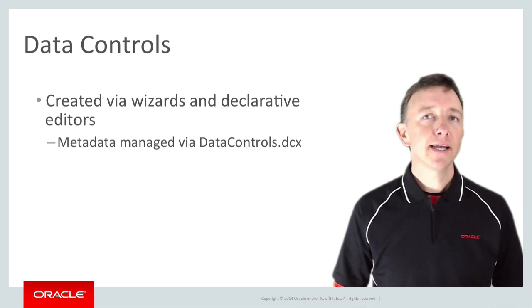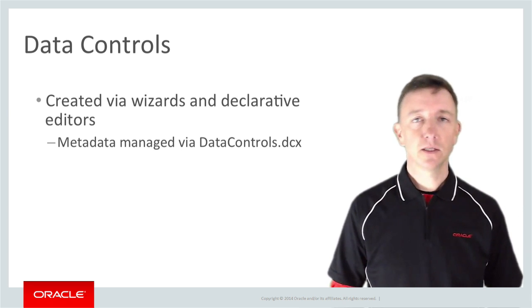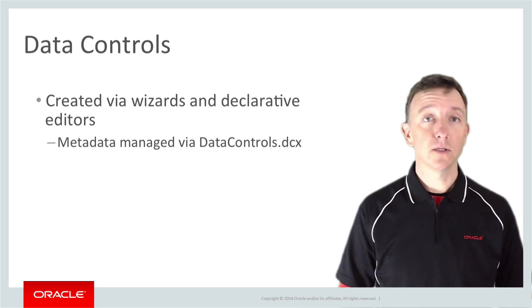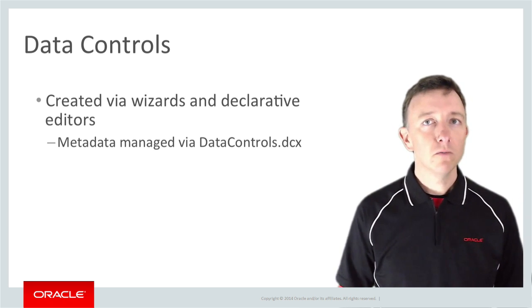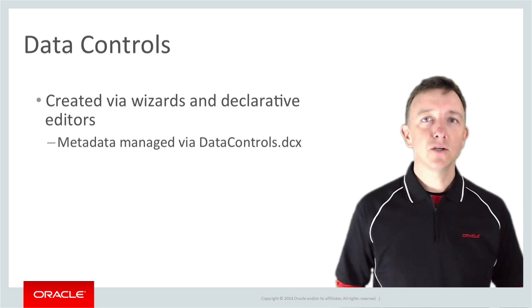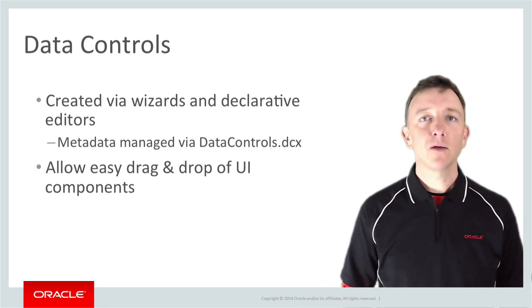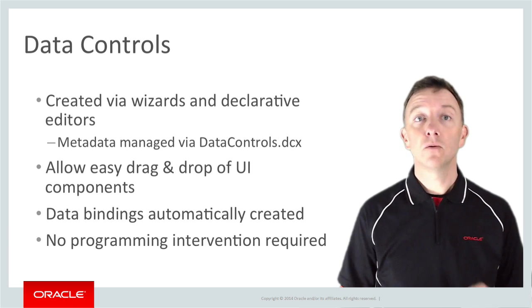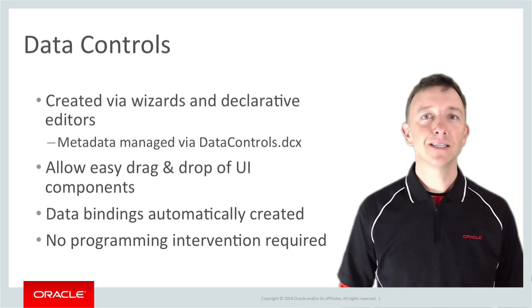MAF data controls are created by wizards and declarative editors — specialized tools for the different data sources, be they Java beans, SOAP-based web services or REST-based web services. Ultimately, the IDE takes care of a lot of the plumbing or plugging in of these disparate data sources into your application. Once we've defined our data control, not only does it allow us to treat all data sources generically, but the massive productivity booster for user interface developers is that these data controls — their data collections and operations — can be dragged and dropped from the data control palette onto an AMX page to automatically wire up AMX components with very little programming required by you, the developer. This productivity boost saves you having to write huge amounts of tedious code that generally does the same thing again and again.